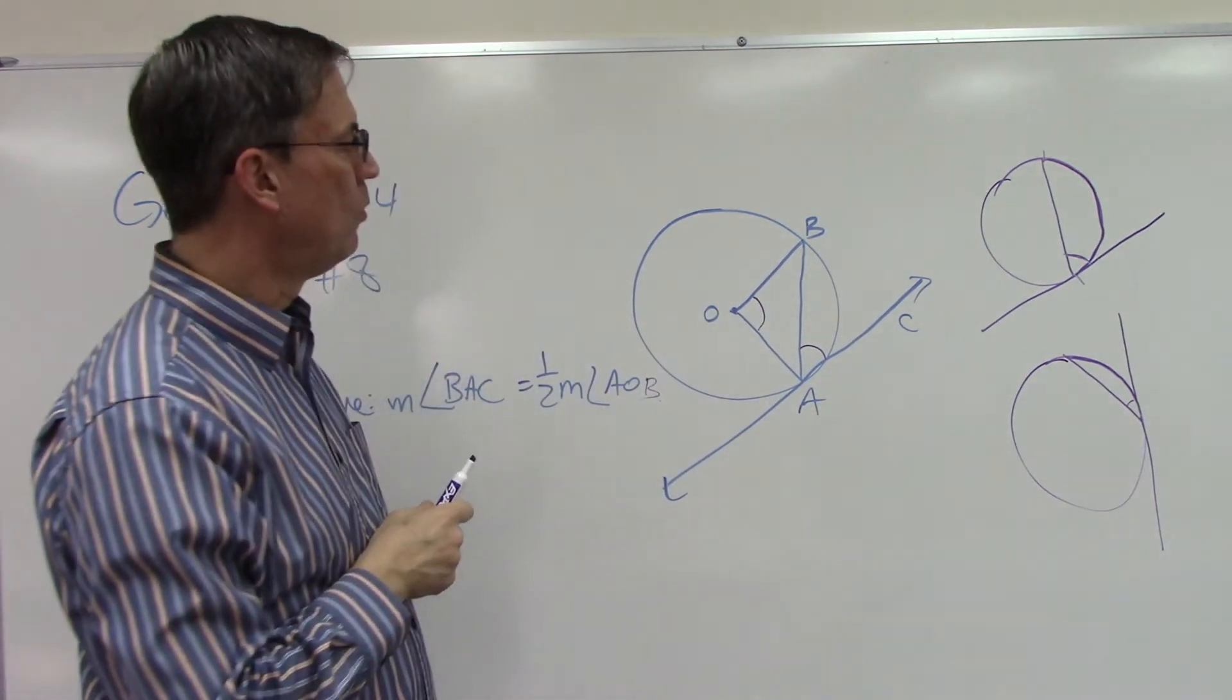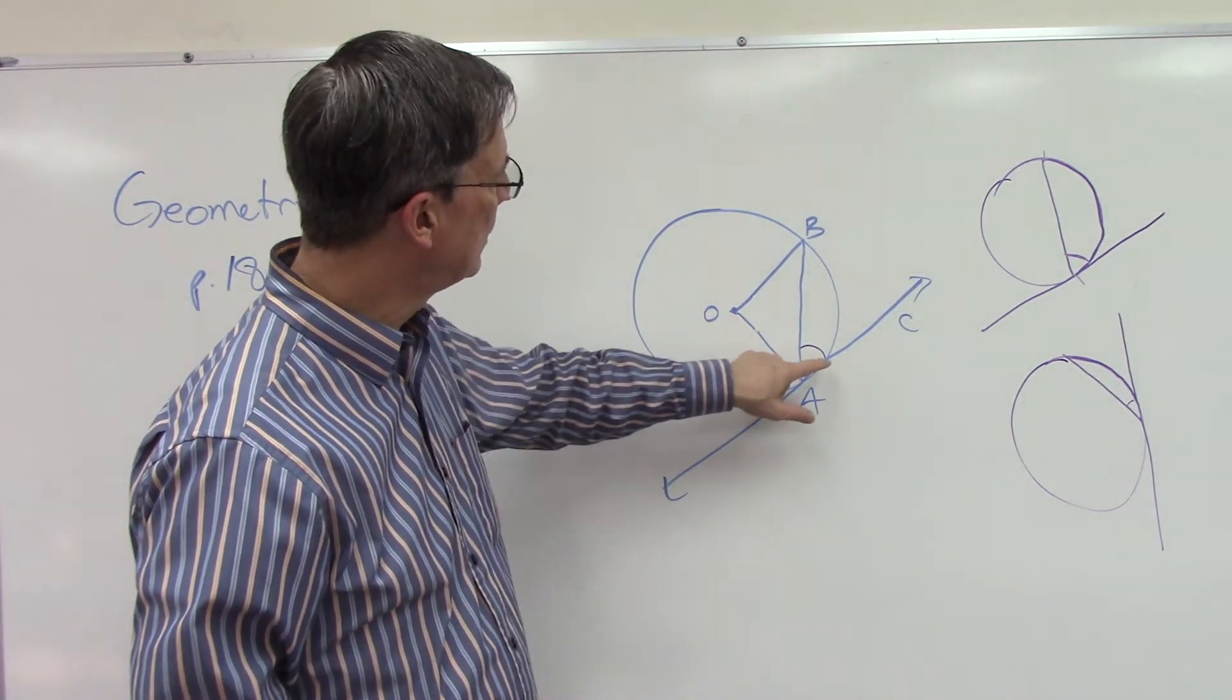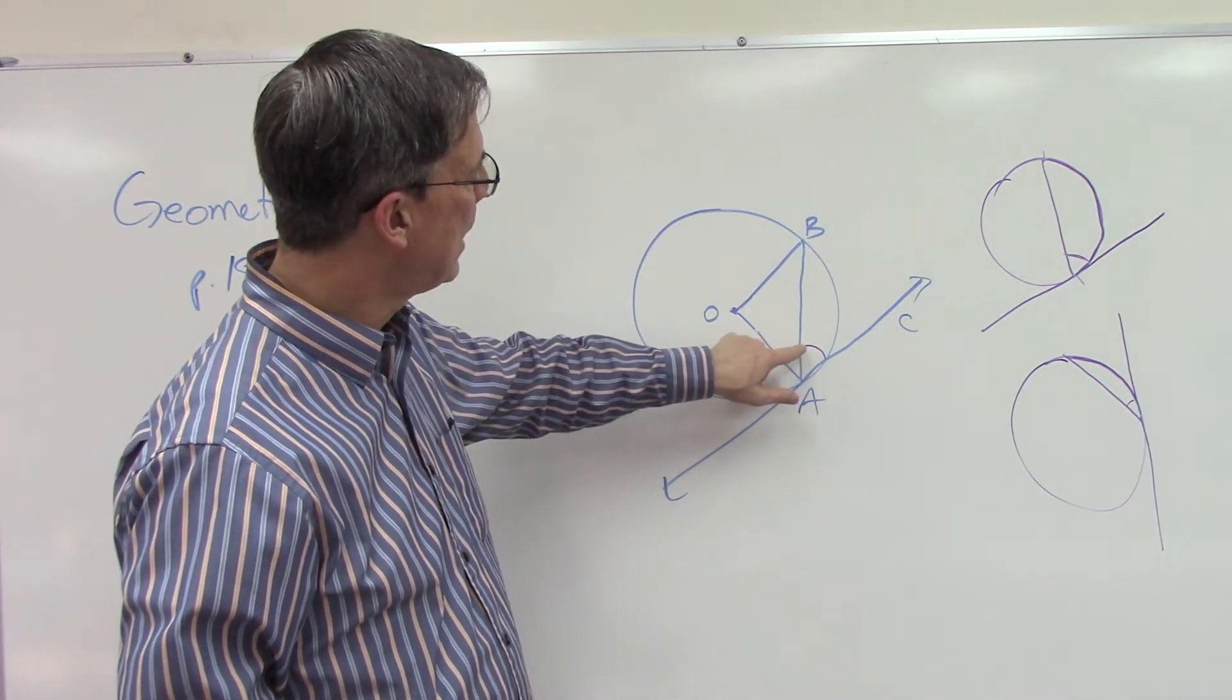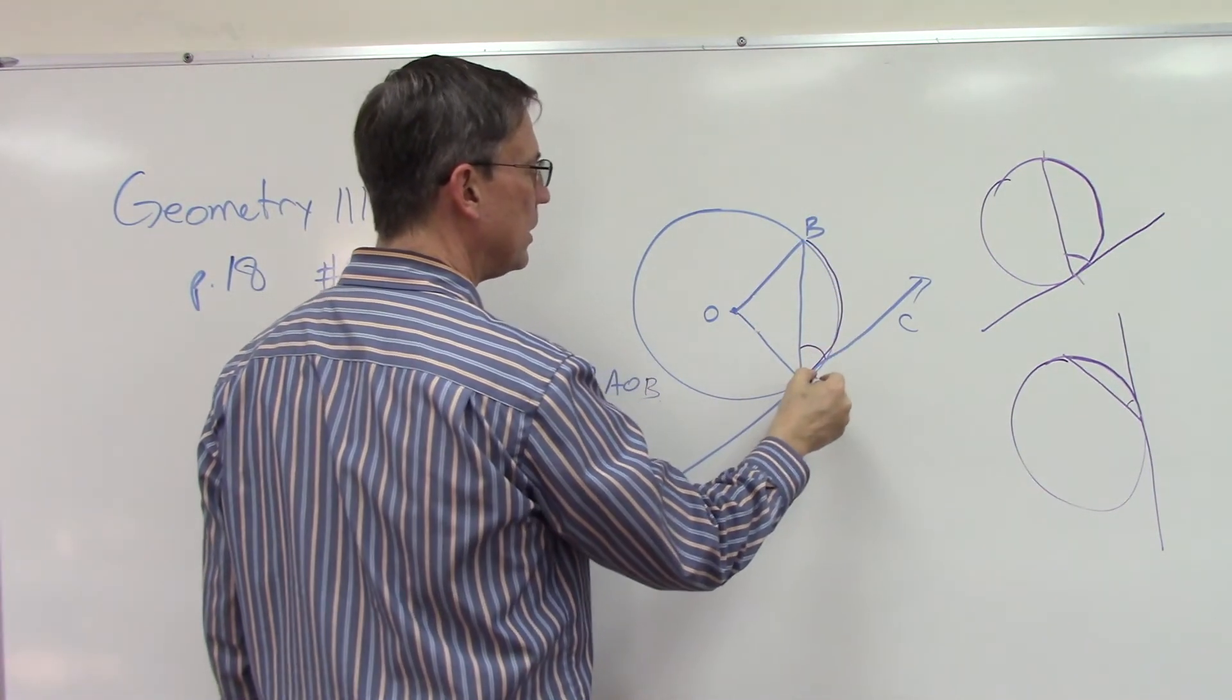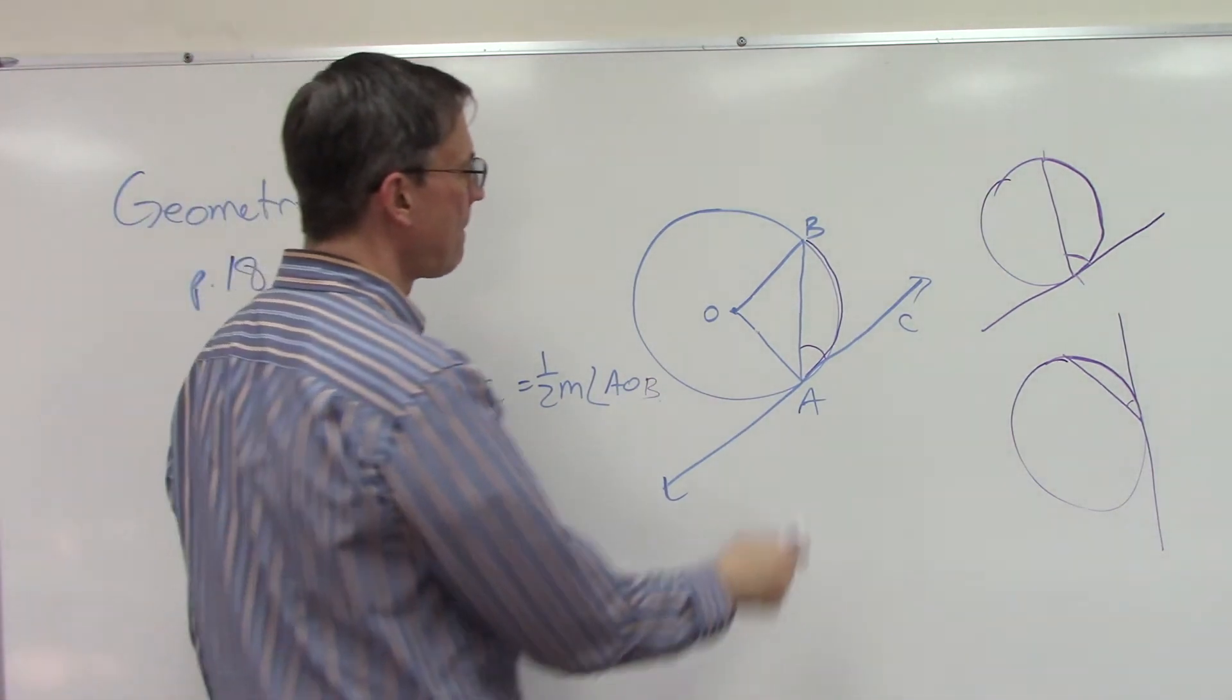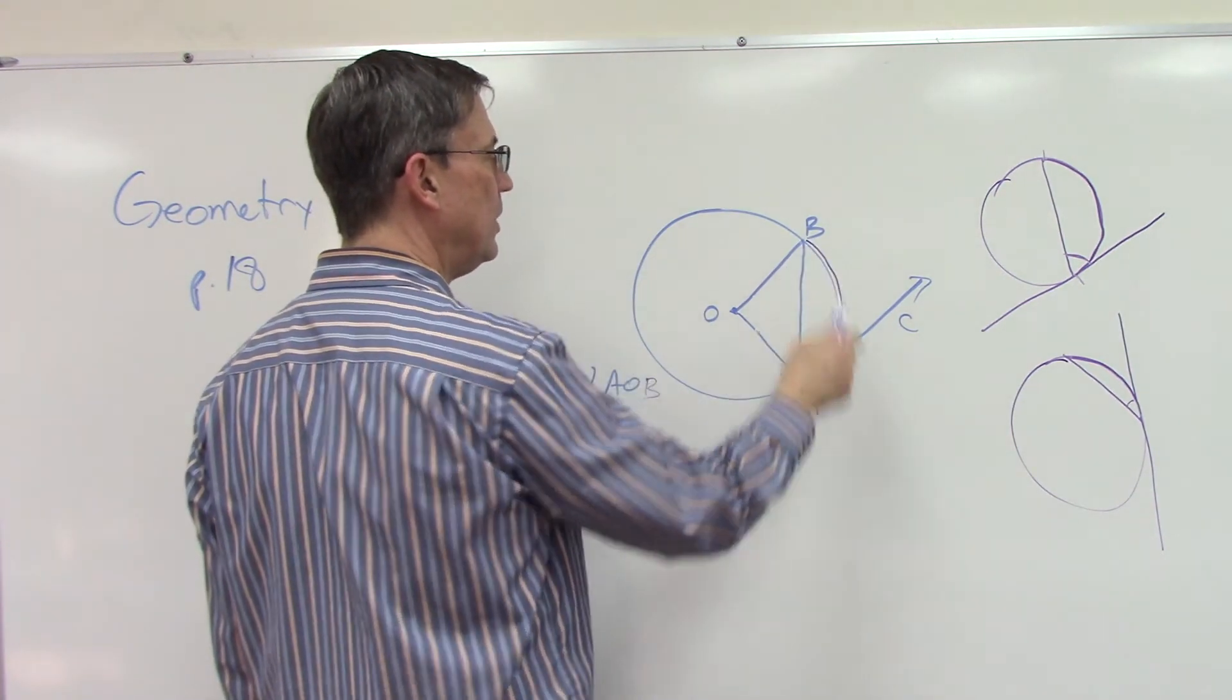Well, the theorem doesn't say anything about this angle, but it does tell us. Theorem 58 says that this angle here will be equal to half of this intercepted arc. Do you see that intercepted arc? So we can use the theorem to make that statement. This angle here is equal to half of this.